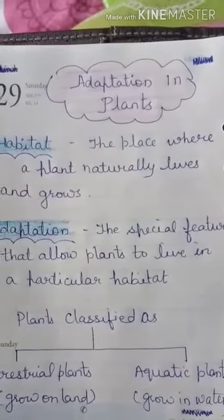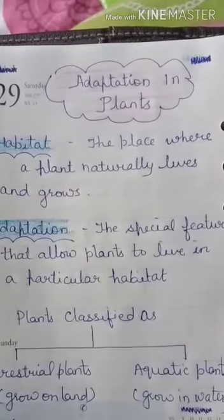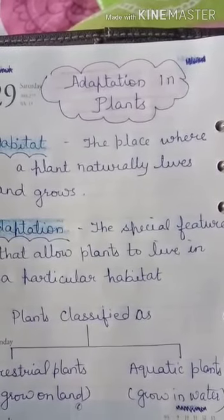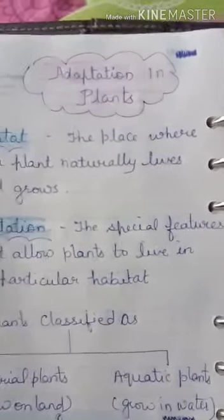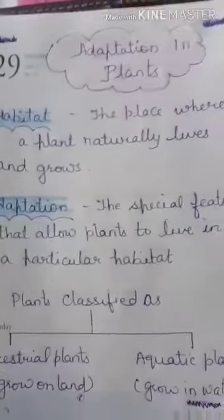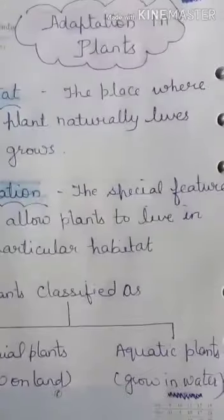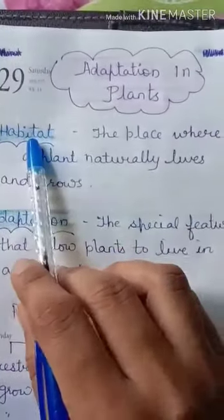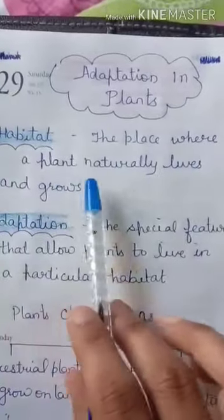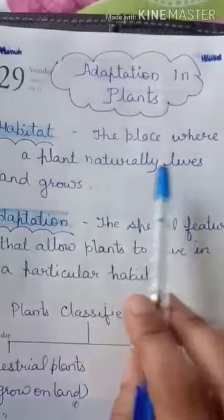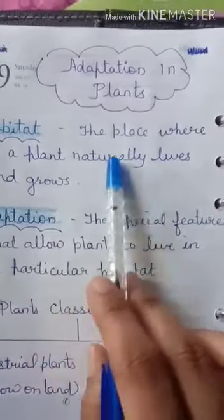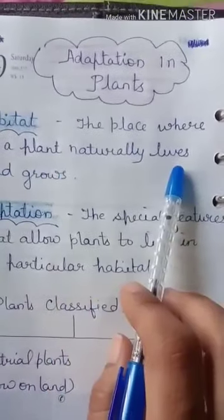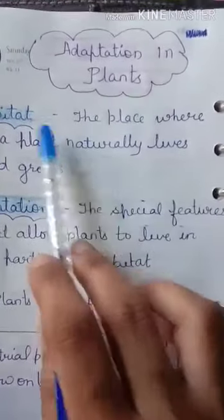Hello students, today we will be revising chapter 2, that is adaptation in plants. We will start with the definition of habitat. A habitat is the place where a plant naturally lives and grows — ek aisi jagah jahan pe plant grow karta hai, wo uska habitat hai.